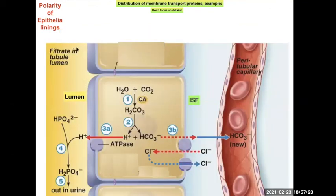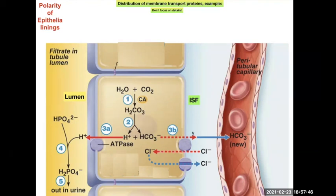In the kidney tubules, the lumen contains filtrate — soon-to-be urine. To excrete acid, carbon dioxide is converted to carbonic acid, which dissociates; hydrogen ions are pumped into the lumen. Bicarbonate ions are pumped out on the interstitial fluid side through a chloride channel located on the basal surface.